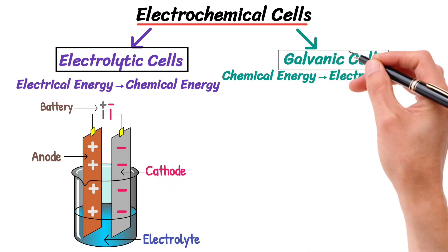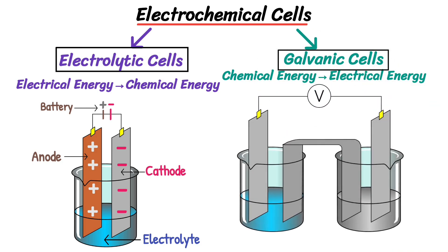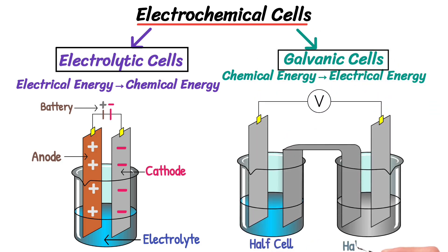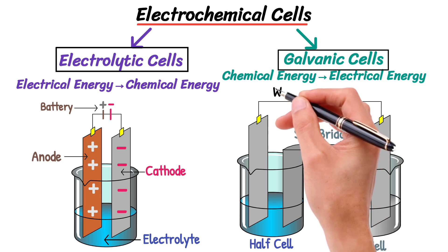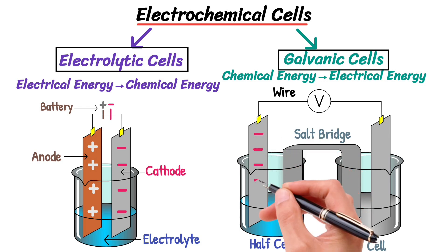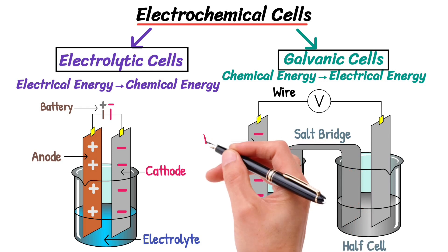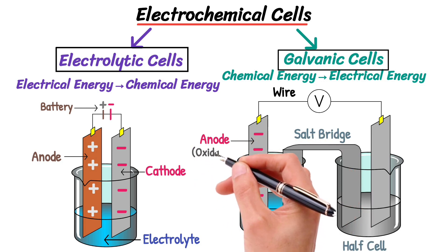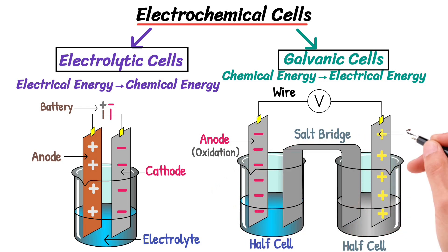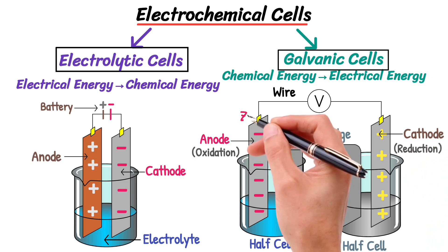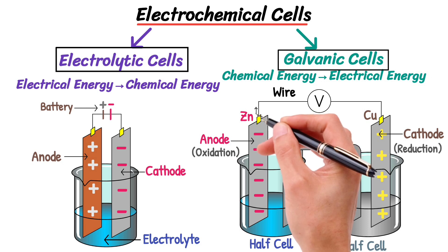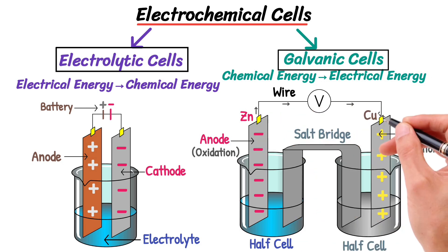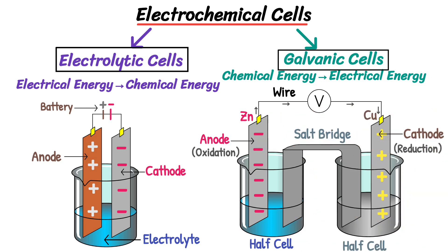A galvanic cell consists of two half cells, each containing an electrode and an electrolyte. The two half cells are connected by a salt bridge, and the electrodes are connected by a wire allowing electrons to flow. One electrode is the anode, which carries a negative charge where oxidation occurs, and the other is the cathode, which carries a positive charge where reduction occurs. Both electrodes are made of different metals with different electrode potentials, and electrons produced by the redox reaction flow from the anode towards the cathode — this flow of electrons is what we call electricity.